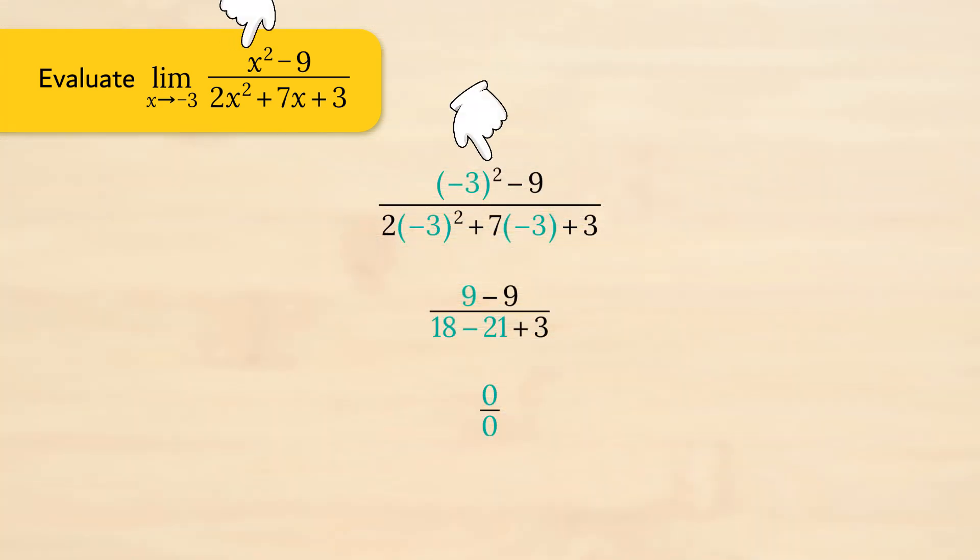In the numerator we have negative 3 squared minus 9, and in the denominator we have negative 3, the entire quantity squared, which is positive 9 times 2, 18, plus 7 times negative 3, negative 21, plus 3. The denominator is also 0.